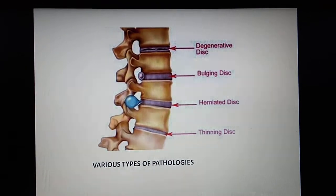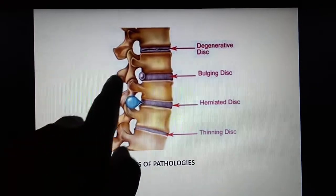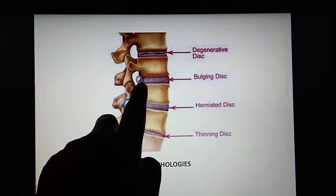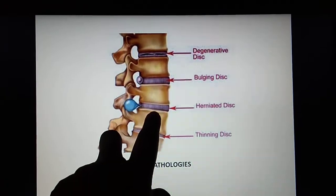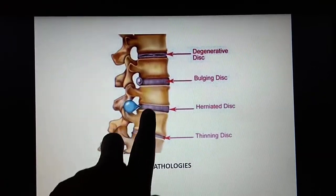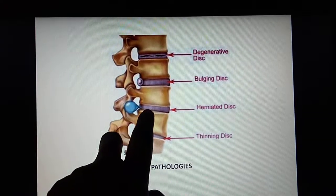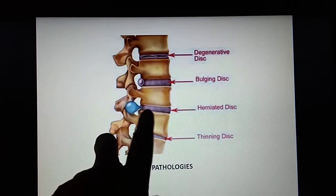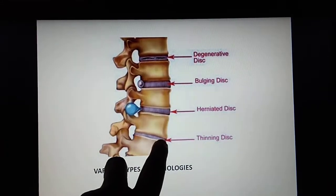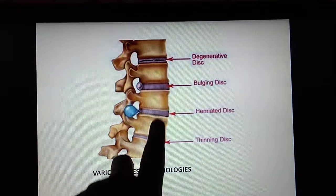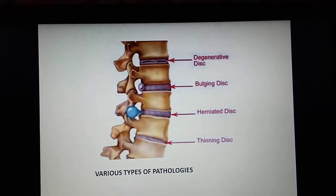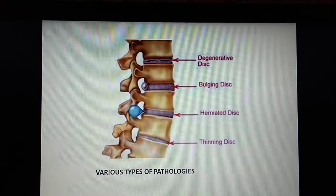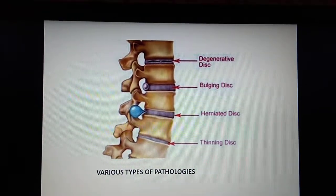Starting from the top, you can see the disc getting degenerative. Below that is a bulging disc. There is very little difference between a bulging disc and a herniated disc — in a herniated disc, part of the disc is coming out. The last one is thinning of the disc, where the size is getting reduced. These are the various pathologies which may also mimic IVDP, so we need to consider other conditions when diagnosing IVDP.